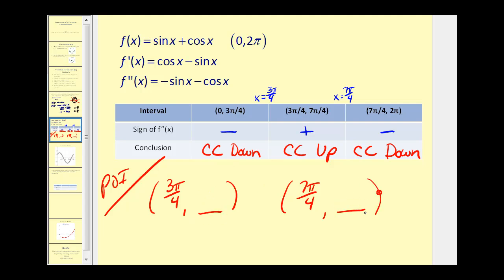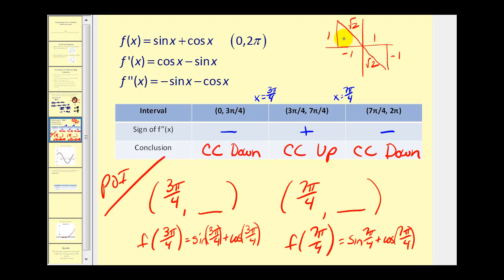We still have to find the y-coordinates of these points of inflection. Be careful — these are points on the original function, so we go back to the original function to find the function values: f of three pi over four and f of seven pi over four. For three pi over four, sine of three pi over four is one over square root two, and cosine of three pi over four is negative one over square root two, so the y-coordinate is zero. For seven pi over four, sine is negative one over square root two, plus cosine which is positive one over square root two — that's also zero.